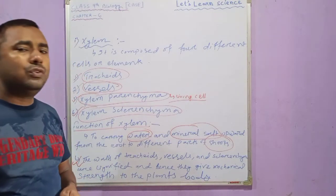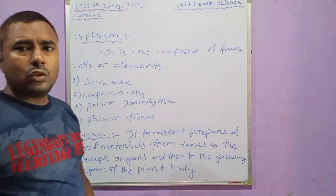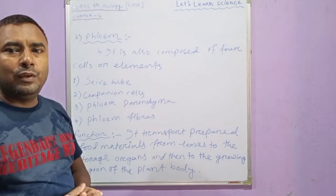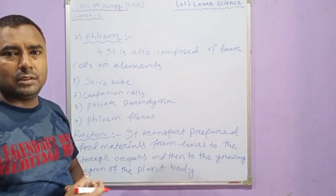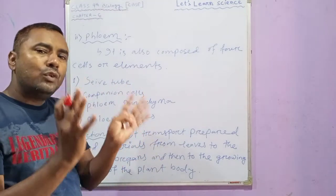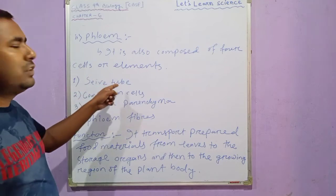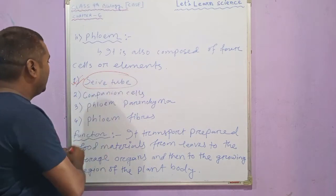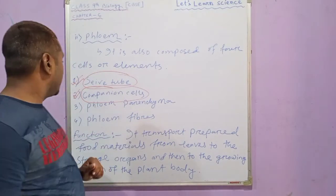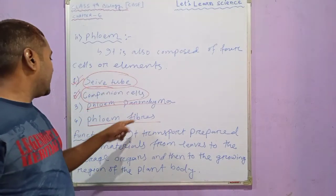Now let us see phloem, which is also a complex permanent tissue and is also made up of four types of cells or elements. The four cells of phloem are: sieve tubes, companion cells, phloem parenchyma, and phloem fibers. So phloem is made up of sieve tubes, companion cells, phloem parenchyma, and phloem fibers.